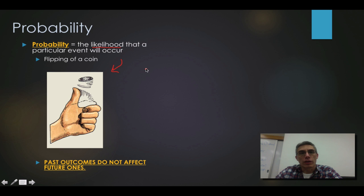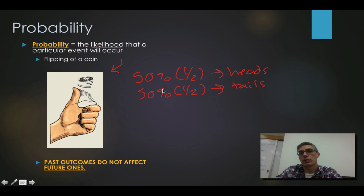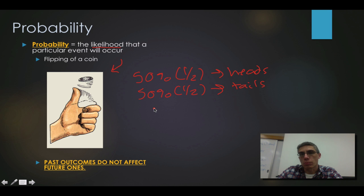I think all of us have flipped a coin before. We understand that the coin has two sides to it — it has a side with a head on it and a side with tails. When we flip that coin, we understand that there is a 50% chance, or one-half chance, that it would end up heads, and a 50% chance, or one-half chance, that it's going to end up tails. We use this same concept as we construct our Punnett squares and look at the likelihood that a trait will show up in the offspring.